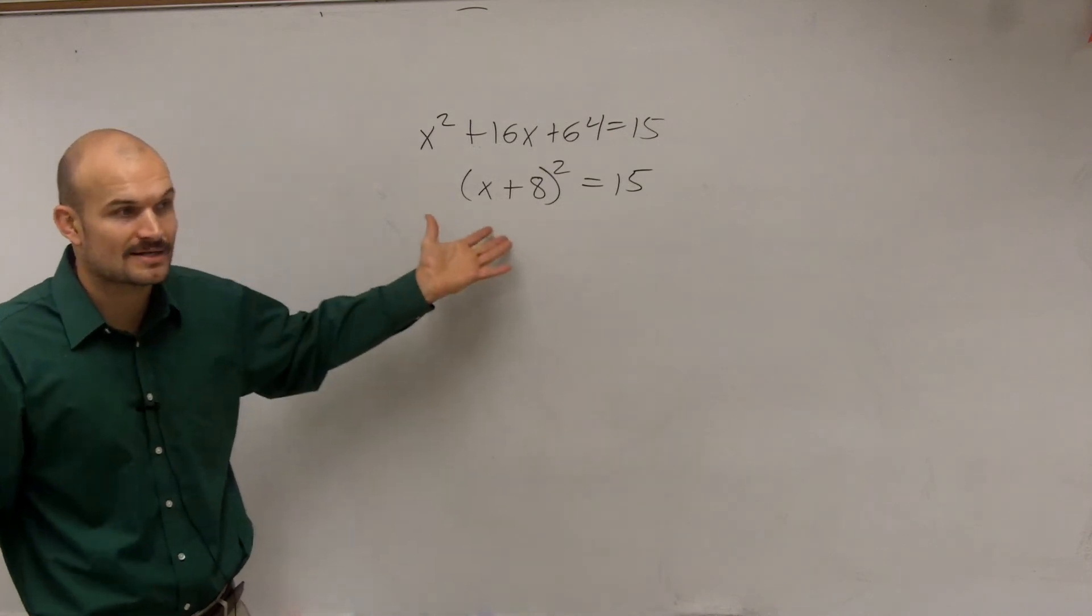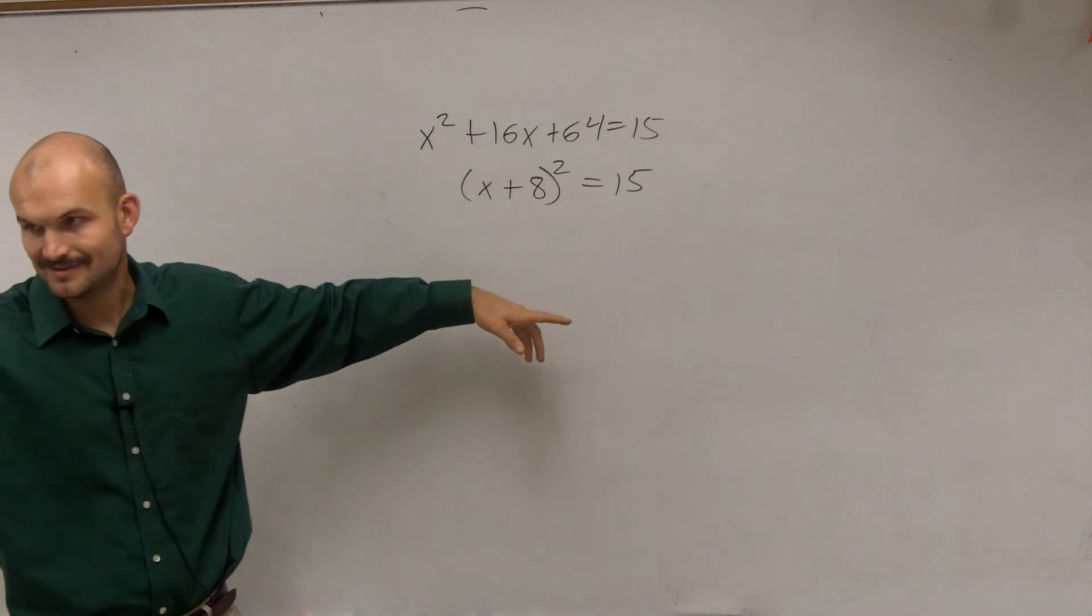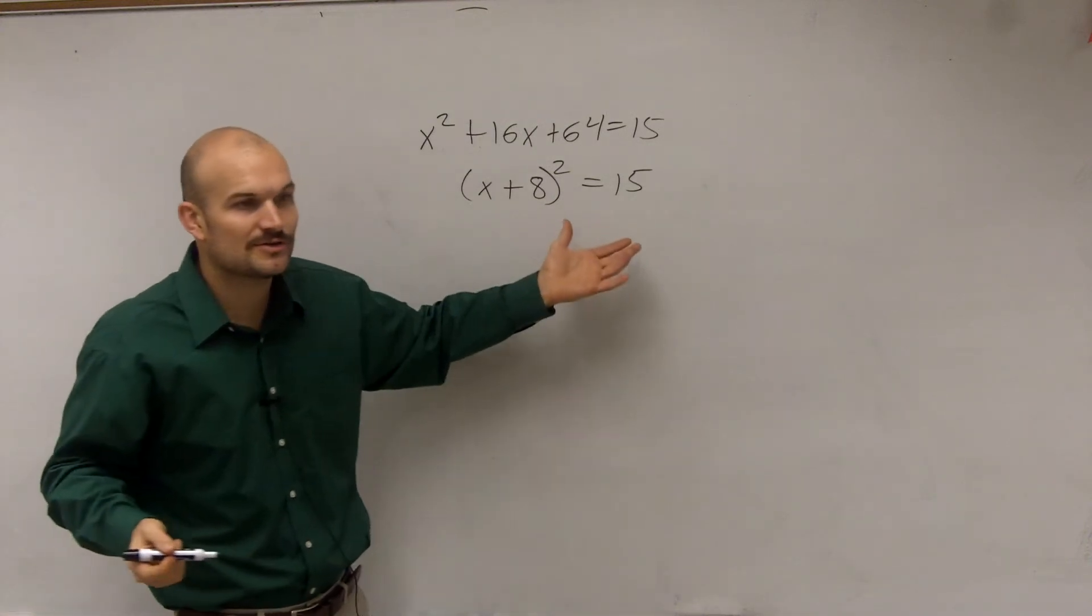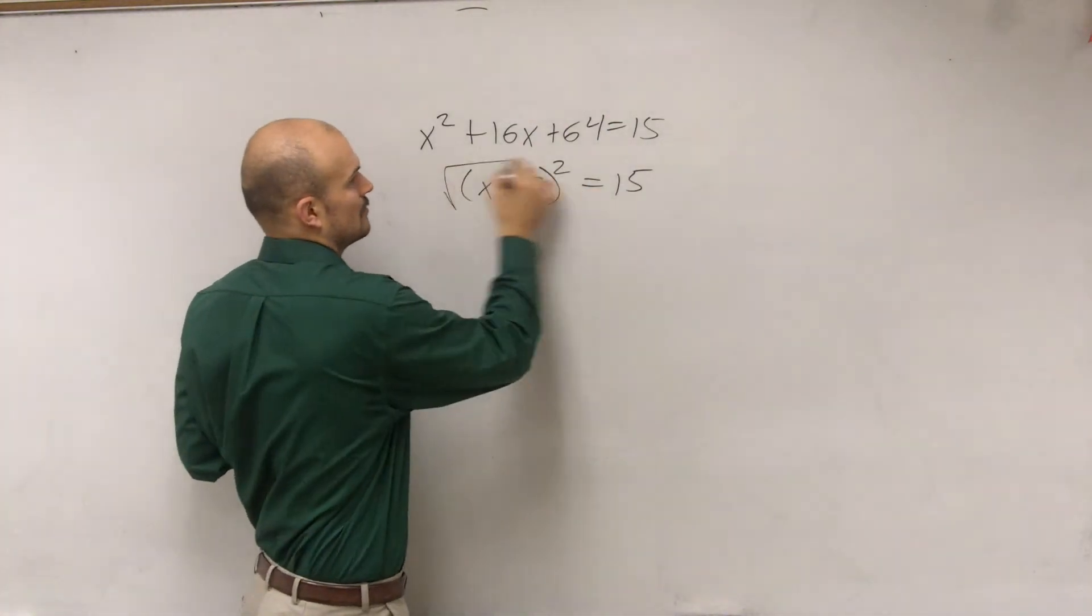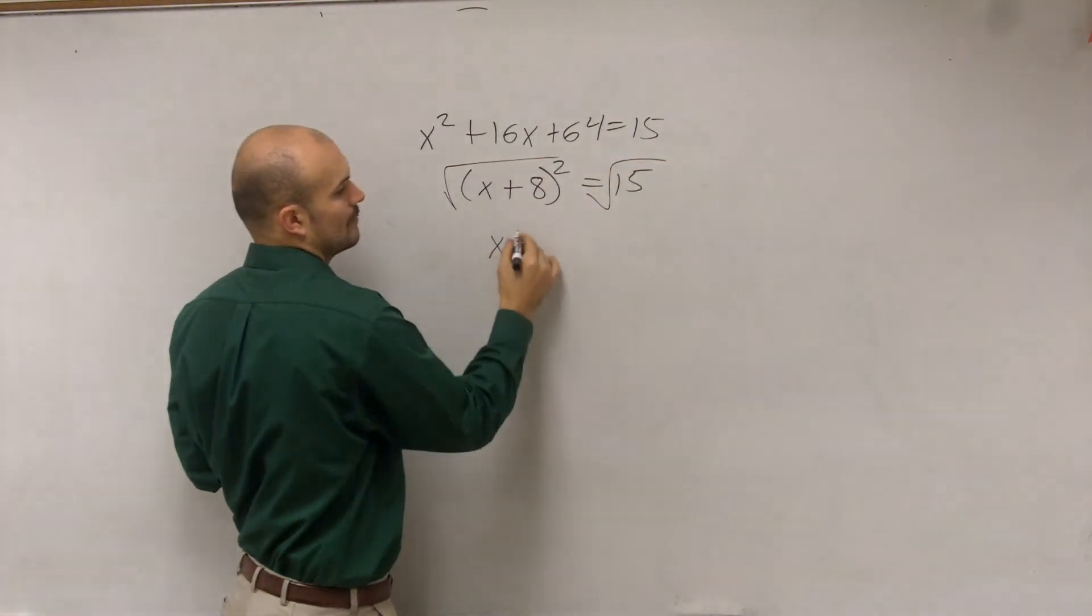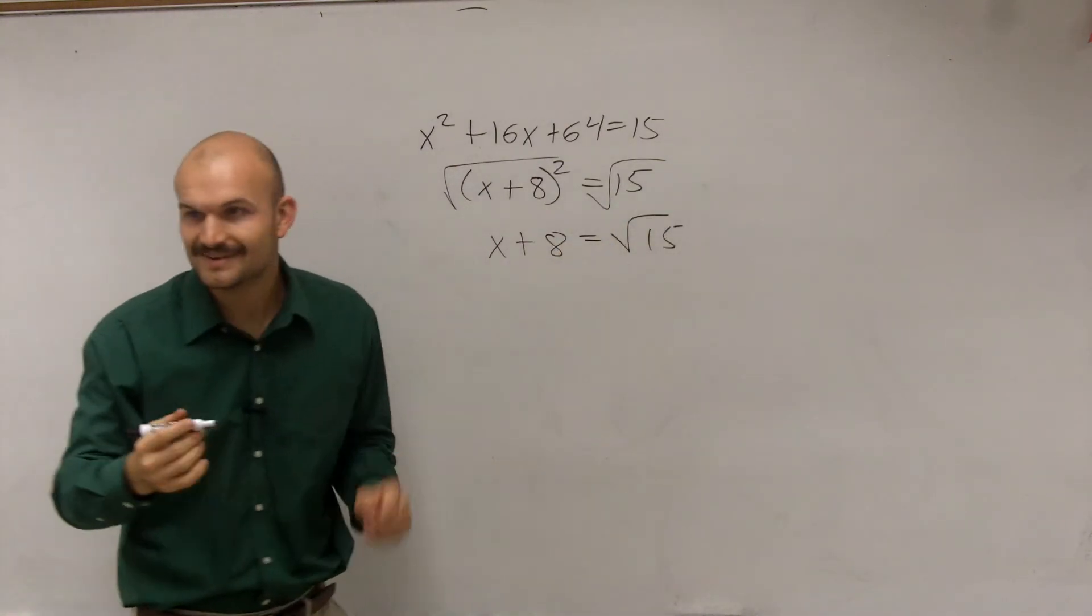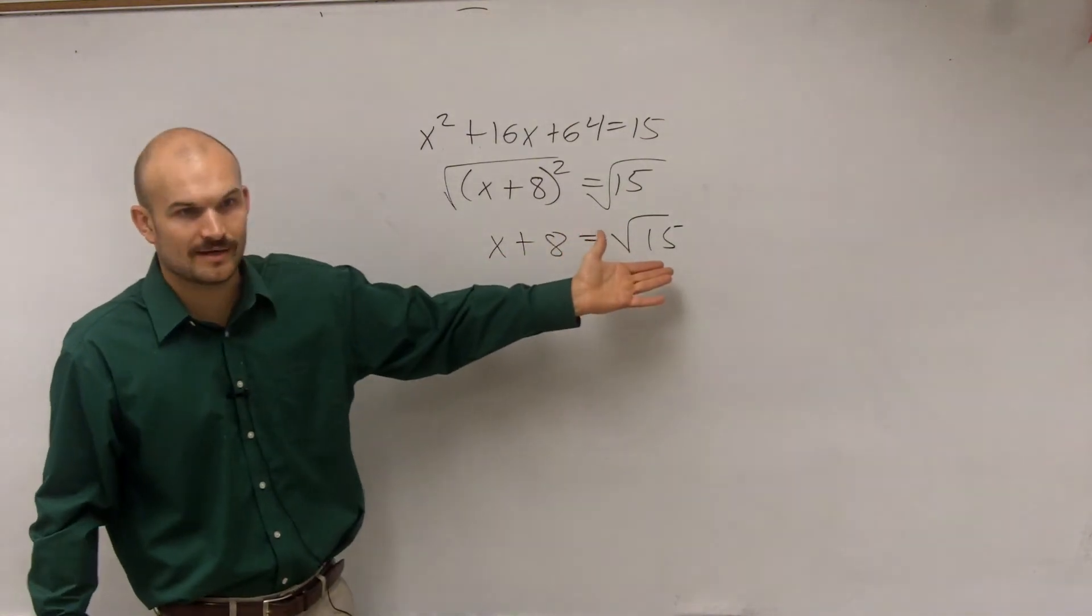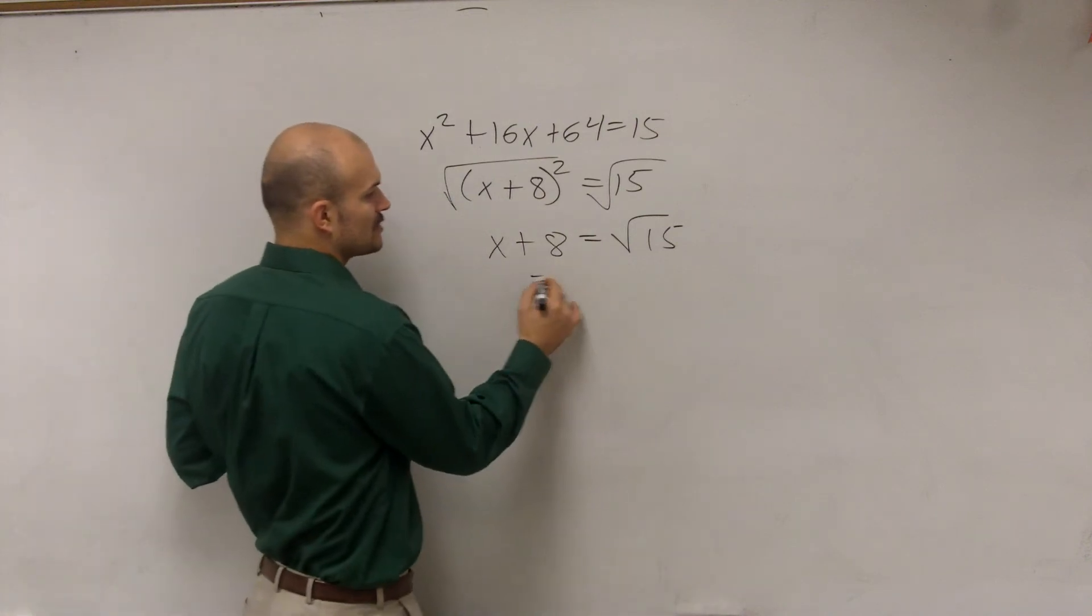Now remember, we're trying to solve for x. So how do I undo squaring? Take the square root. So now I take the square root of 15, which I cannot simplify any further, and then I'll just subtract 8.